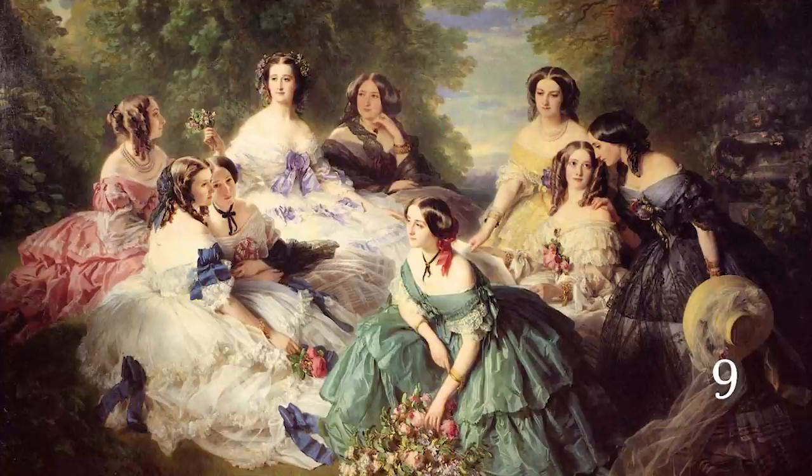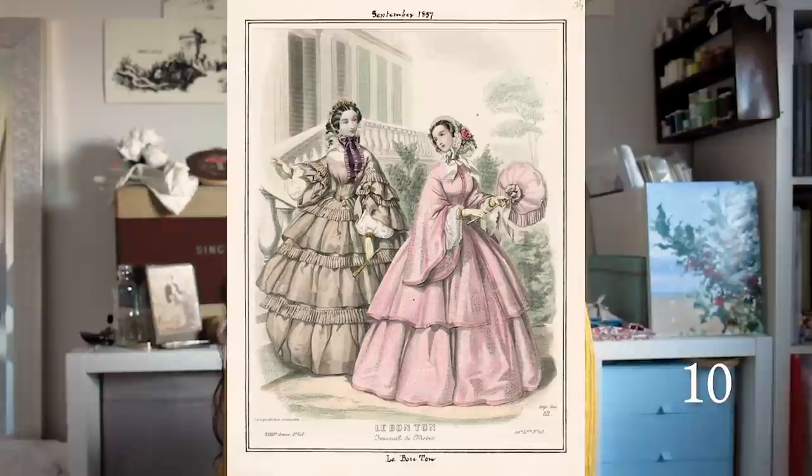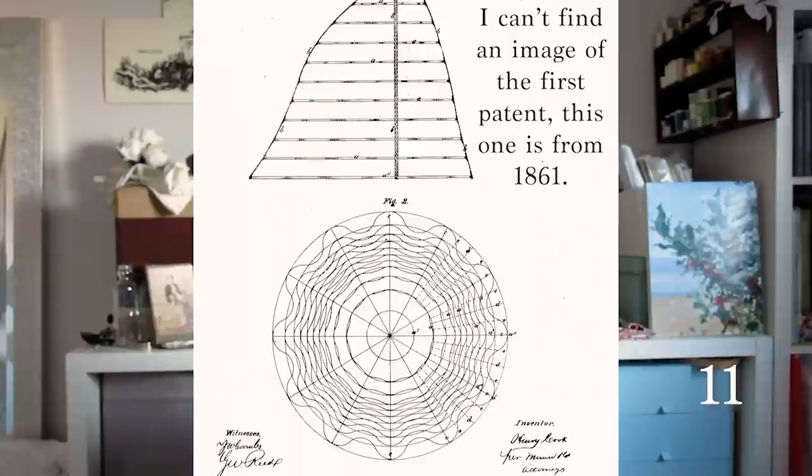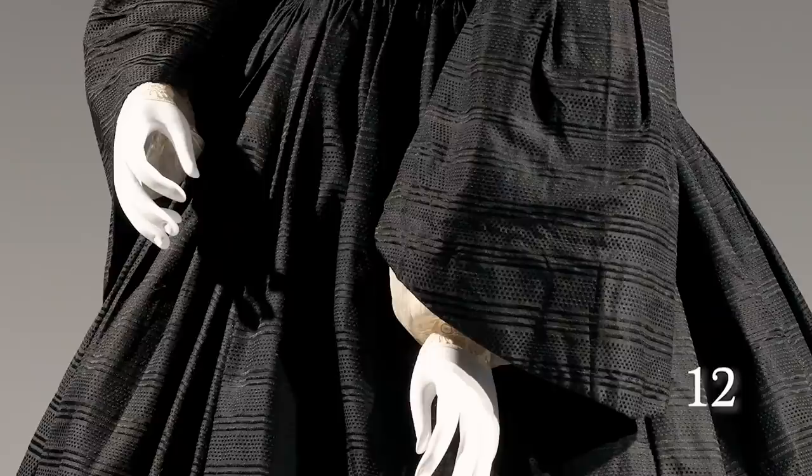The 1850s. The ever-expanding hem continues into the 1850s. Emphasis remains on a small waist with drooping shoulders. The initial bell of the 1840s becomes fully realised in the dome shape of the 1850s. The sheer amount of fabric needed for these skirts required a lot of support, usually from several petticoats. In 1856 the first steel cage crinoline was patented, creating a solid and more lightweight way to achieve large shapes, so skirts continued to increase into the 1860s. A more natural waist was preferred and sleeves expanded once again into what were often called pagoda sleeves. Tiered skirts also became fashionable.